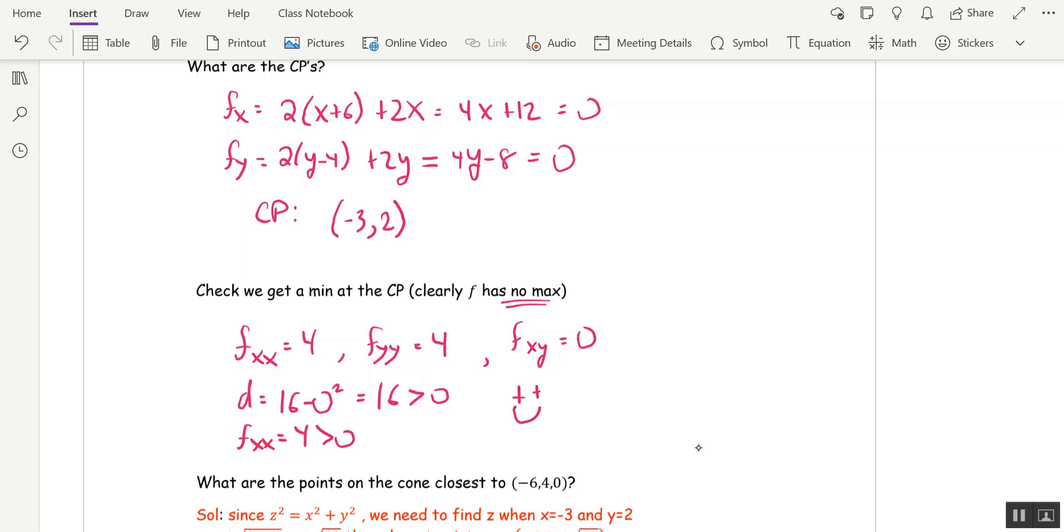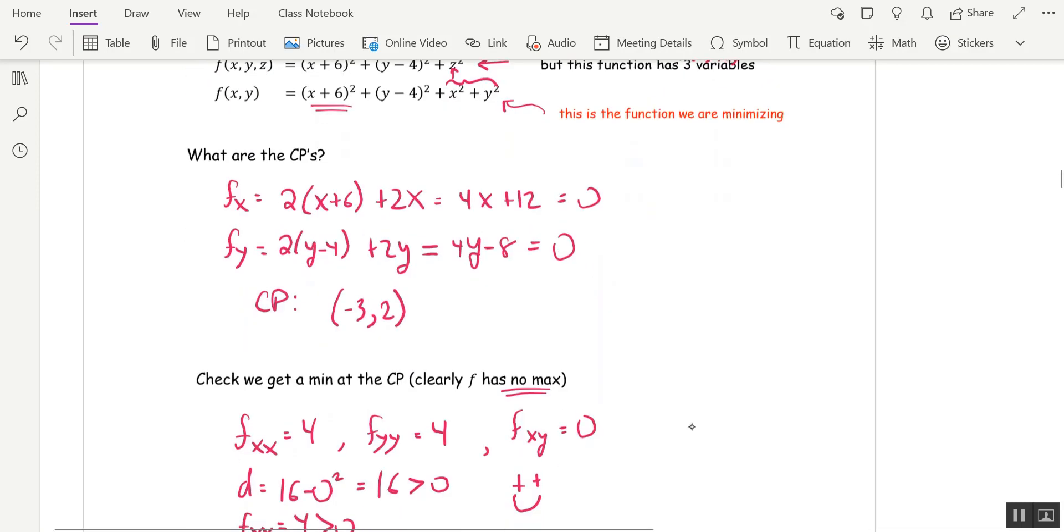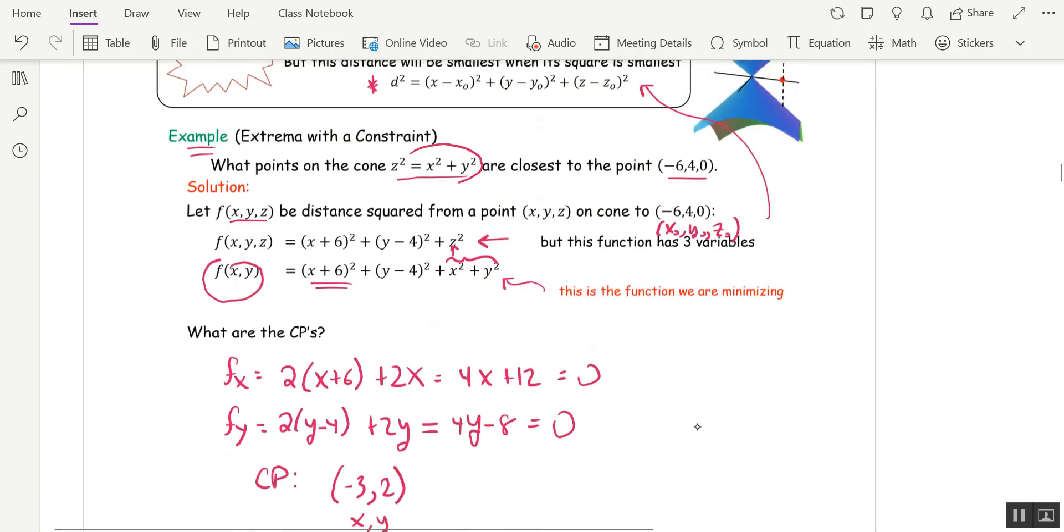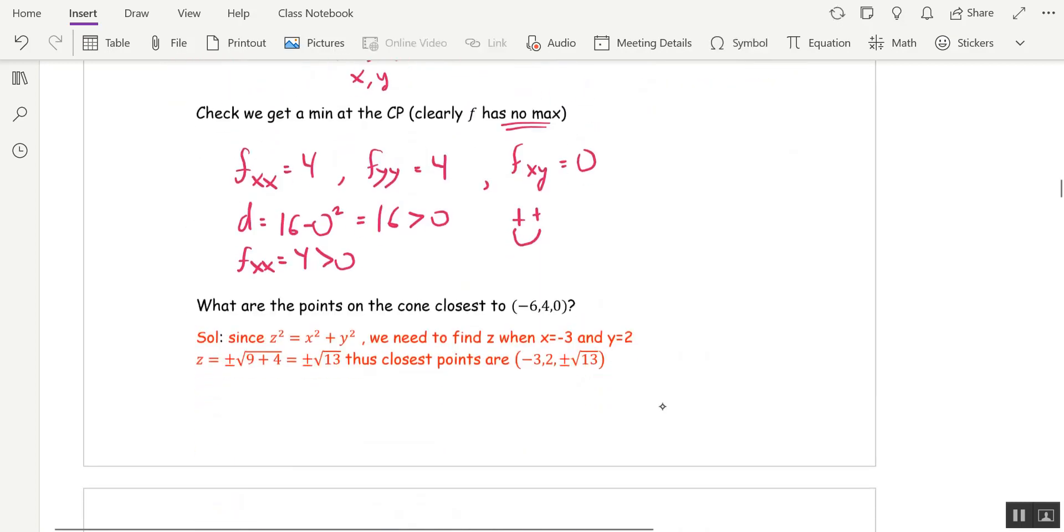All right. And then I went ahead and finished the problem for us. The question actually asked for the points on the cone that are closest to the point negative 6, 4, 0. So we only found the x and y coordinate. We need to find the z coordinate. And the question is, do you go back to the distance squared formula, or do you go back to the original cone formula? And the answer is, you're going to go back to the original cone formula, because that formula gives you the z coordinates on the cone. And we can see that we get two of them, and here they are.